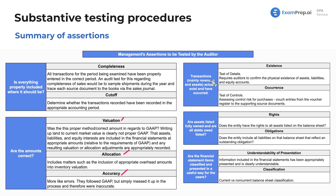Existence and occurrence — did transactions actually exist and occur? Existence is more associated with substantive testing and requires auditors to confirm the physical existence of assets, liabilities, and equity accounts. Occurrence is more associated with test of controls — assessing control risk for purchases, for example, by vouching entries from the voucher register to supporting source documents. Completeness is concerned with understatement; occurrence is concerned with overstatement, checking that revenue entries actually occurred.